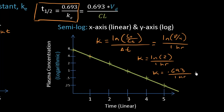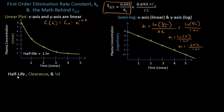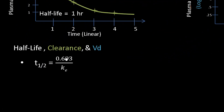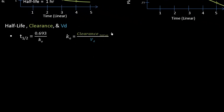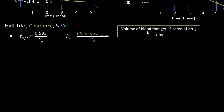The units of k are inverse time, which makes sense since k is in the denominator when solving for the half-life. Now let's derive the equation relating the half-life to clearance and volume of distribution. The first order elimination rate constant is determined by clearance divided by volume of distribution.